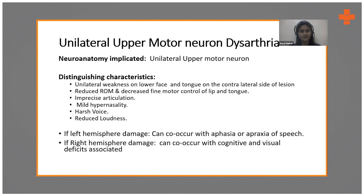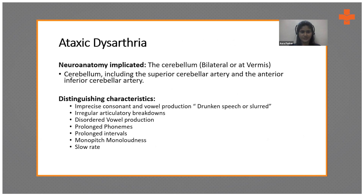In ataxic dysarthria, the cerebellum is damaged — it must be bilateral damage, or at least at the junction of both lobes, called the vermis. The distinguishing characteristics are imprecise consonants and vowel production. The classic presentation is drunken or slow speech. Features include irregular diadochokinetic rates, disordered vowel production, prolonged phonemes, prolonged intervals, monopitch, monoloudness, and slow rate of speech.